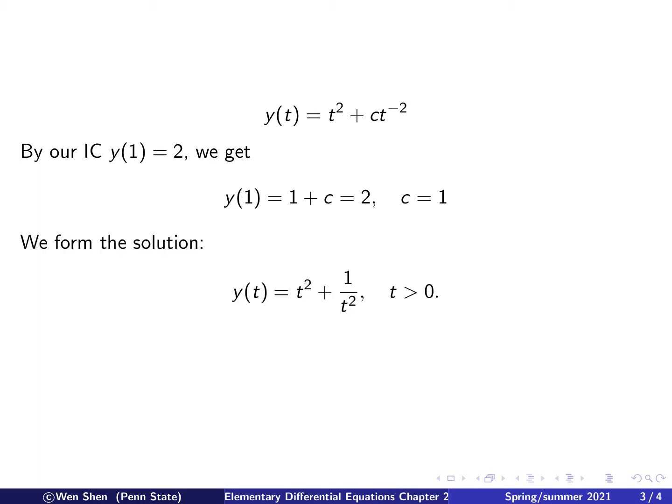So finally, now we can form the solution, yt equals t squared plus 1 over t squared. And here there is a little trick, because we assumed that t is not 0. So on what interval is this solution valid? Here I have written that this solution is valid for t bigger than 0. Why is that?